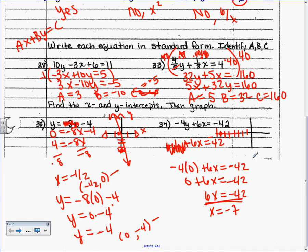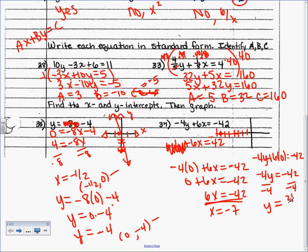To find y, set x = 0. That leaves −4y = −42. Divide both sides by −4: two negatives make a positive, so y = 42/4, which reduces to 21/2, or 10 and a half. On the y-axis, count up 10 and a half and place your dot. Connect the two dots to make the line. That's our graph.